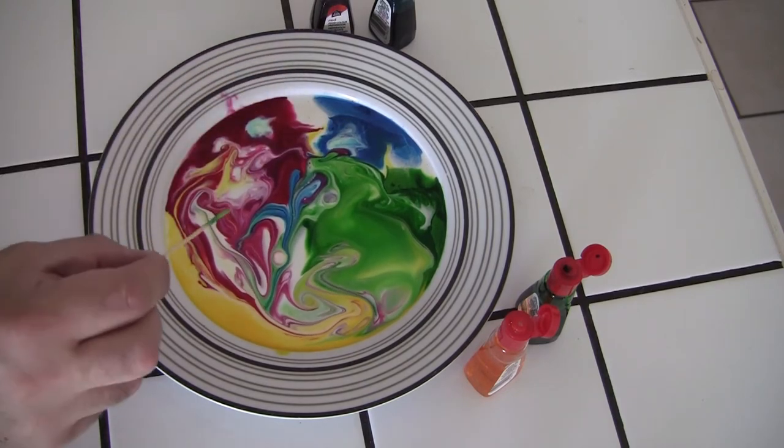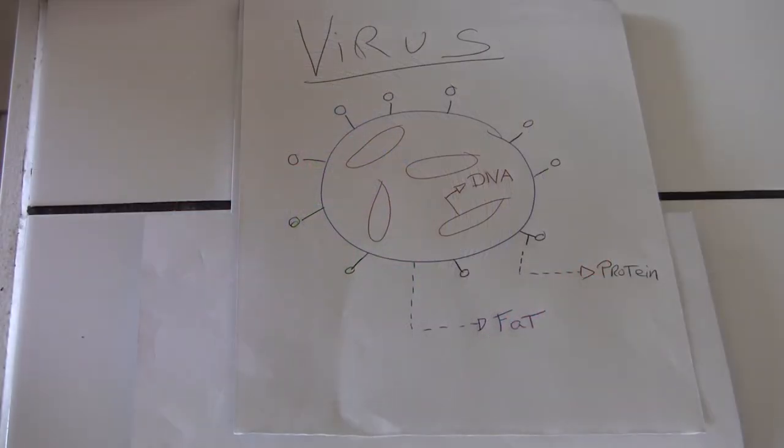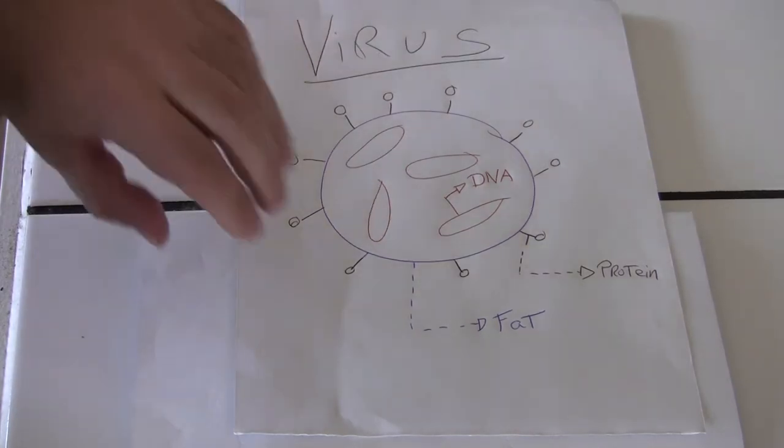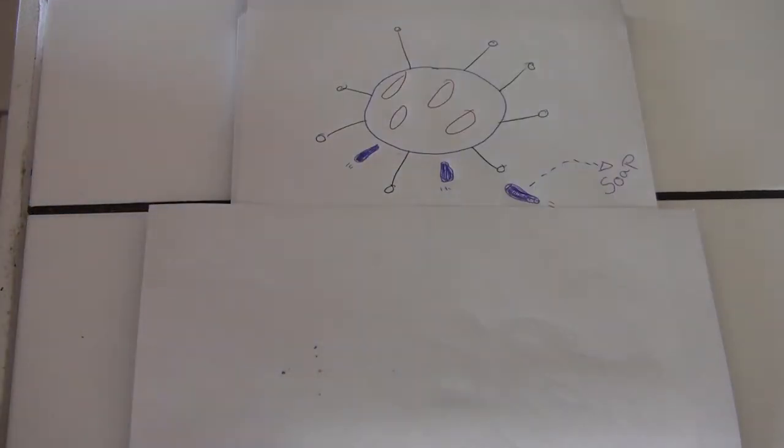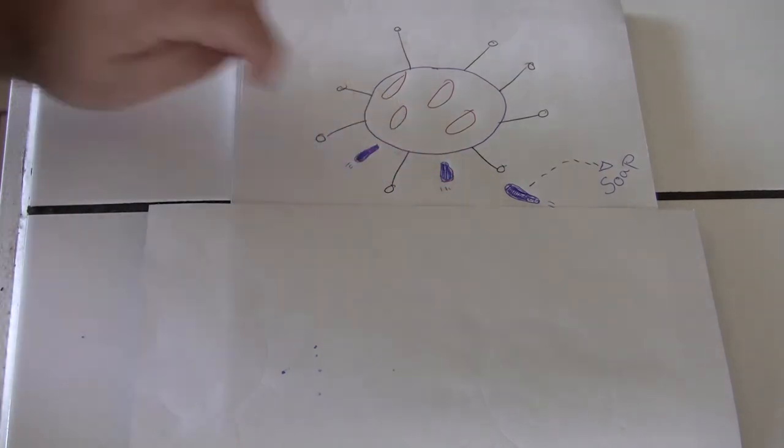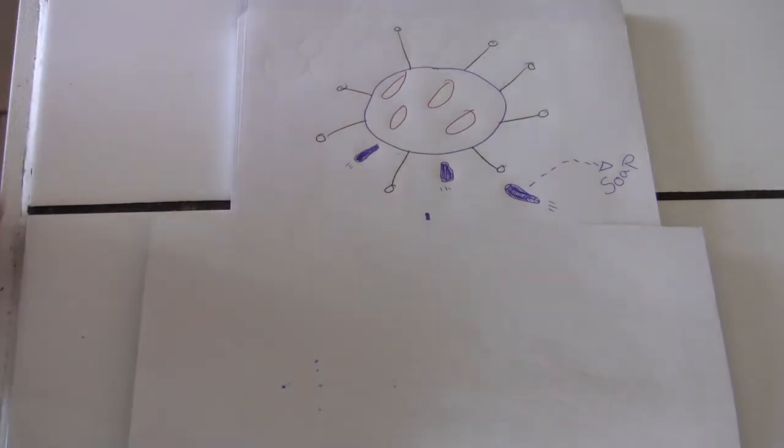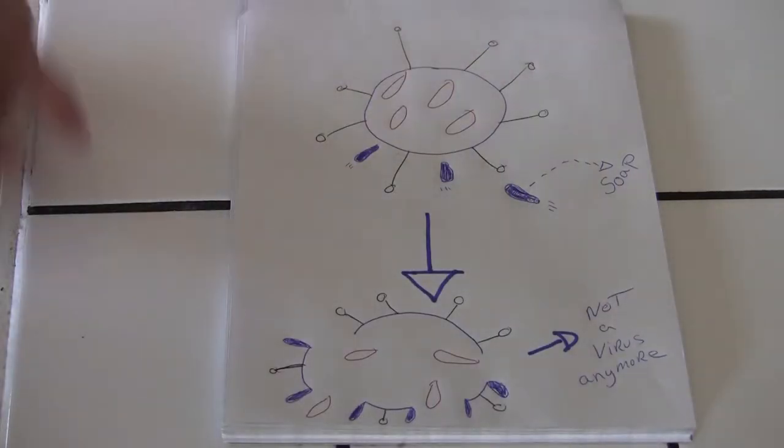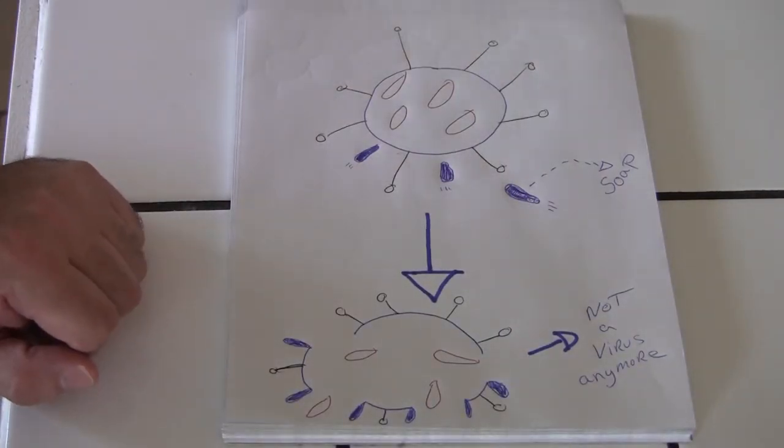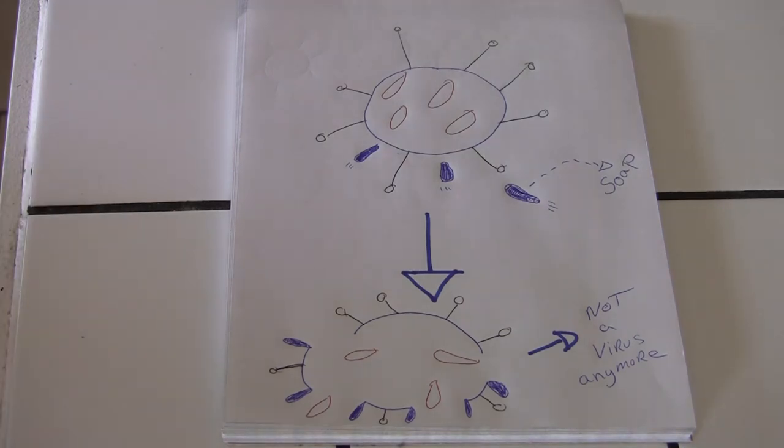So, I hope you guys enjoyed that. Now, what we've learned is the soap likes to stick to the fat. So, if we go back to the virus, the layer is made of fat. So, what happens with the soap is the soap will go and stick to the layer of that virus, and once it does that, it breaks the layer of the virus, and there's no such thing as a virus anymore. This is why the soap is so effective and very important.